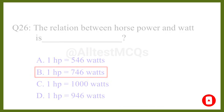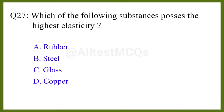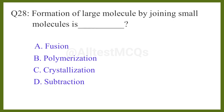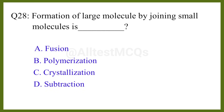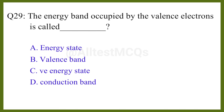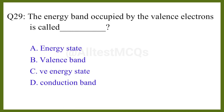One horsepower is equal to 746 watts. Question number twenty-seven: Which of the following substances possesses the highest elasticity? The correct answer is option B. Question number twenty-eight: Formation of large molecules by joining small molecules is called the correct answer is option B: polymerization.